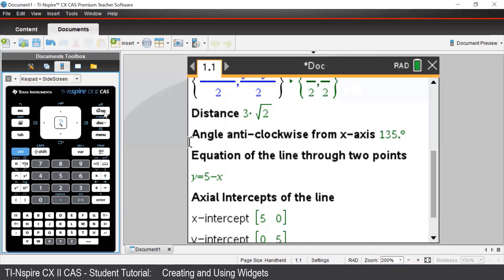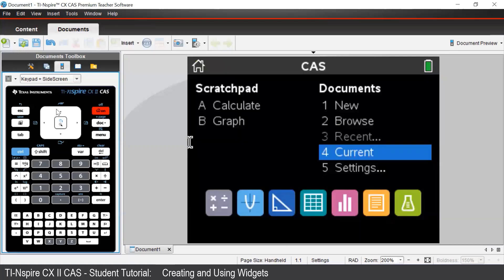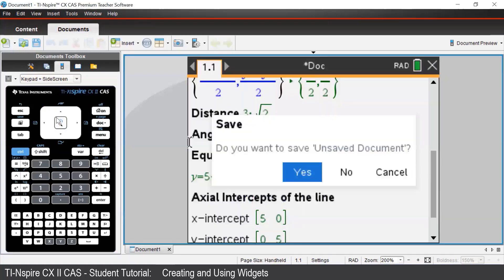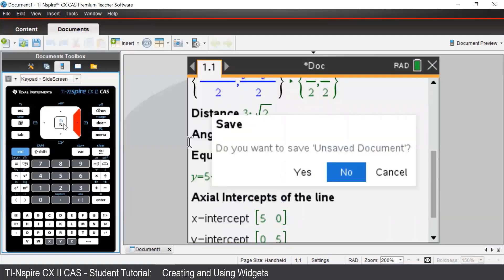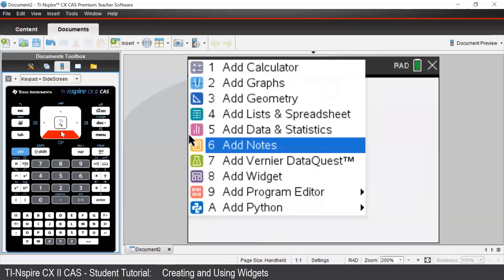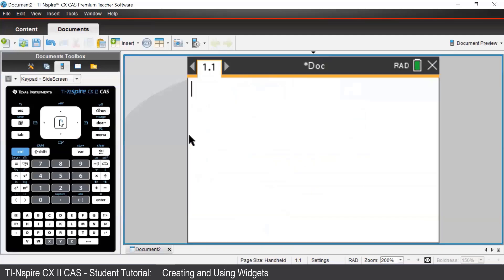First we'll need to open up a new document and select add notes. We need to enter in a math box by pressing ctrl M. We'll define the value of x1 using the assign command, and to enter the assign command we press ctrl and the template button, and we'll assign x1 to be 2 just for now.